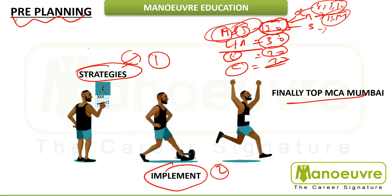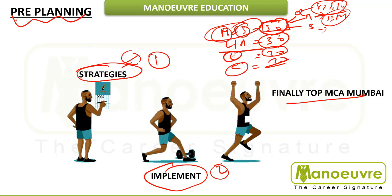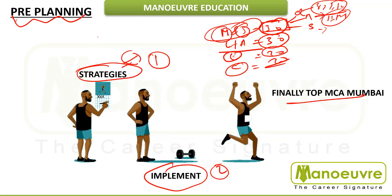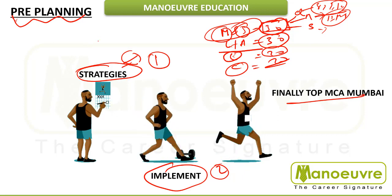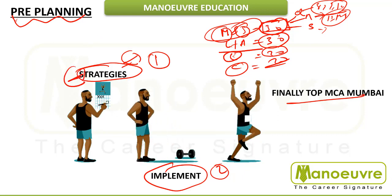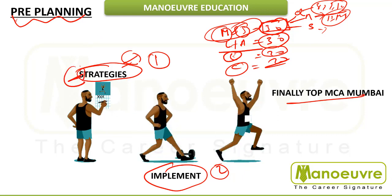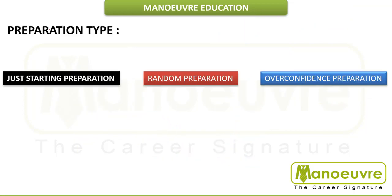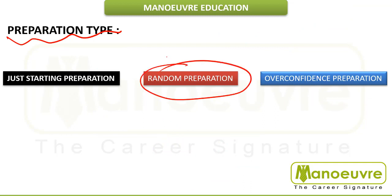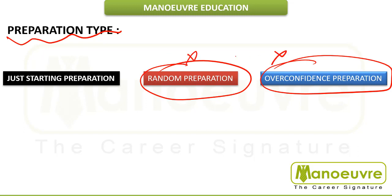Those who are watching this video today can enroll at any of the centres and you can meet me when I come for the session. You can get the whole strategy, and if you follow it, I can bet that your score of 140 plus will definitely come out of 200 marks. The problem is the type of preparation people do — one is random preparation, which is the most dangerous, and the other is being overconfident. Both of these will ultimately lead you to flunk in the exams.